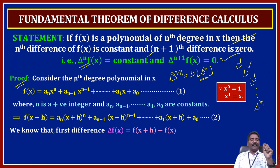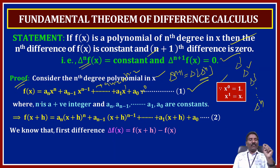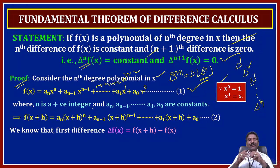Proof. Consider the nth degree polynomial in x: f of x is equal to a_n · x^n plus a_(n-1) · x^(n-1) plus a_(n-2) · x^(n-2) plus and so on, a_1 · x plus a_0, denoted by equation 1. Where n is a positive integer and a_n, a_(n-1), a_(n-2), and so on, a_1, a_0 are constants.